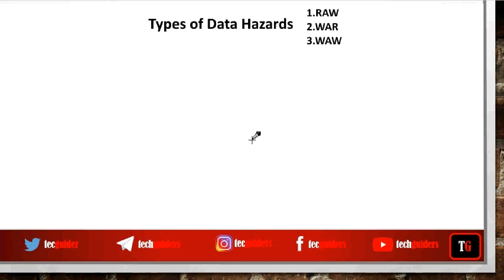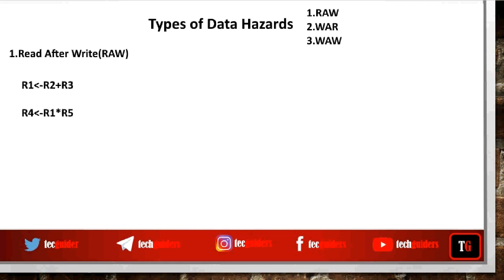There are three kinds of data hazards possible: read after write, write after read, and write after write. The type of data hazard we had discussed so far comes under the category of read after write data hazard. According to the program order, instruction i2 is expected to read the data from register r1 after i1 completes its write to r1, so that i2 can read that data from r1 for its computation.